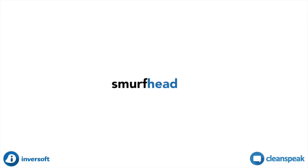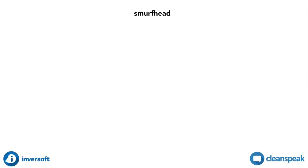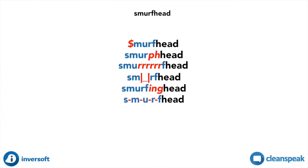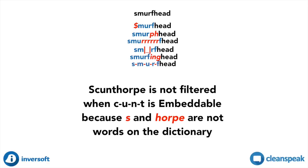Embeddable entries will also be found from the baked-in filter intelligence, as seen here. The Embeddable filter mode solves the original Scunthorpe issue by setting the C-U-N-T entry to Embeddable. The filter knows that Scunthorpe shouldn't be a match because it doesn't make sense — C-U-N-T isn't next to a word or a number.